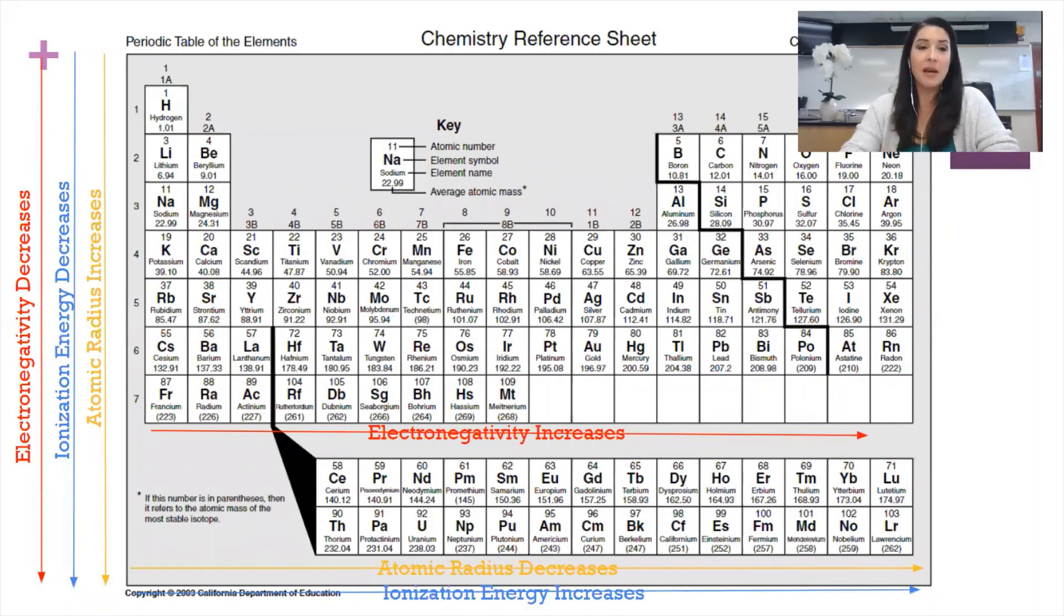So here's an example of how you would annotate your periodic table in such a way that you can see the ionization energy, atomic radius, and electronegativity trends.